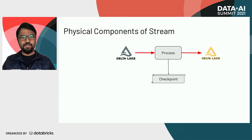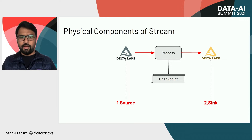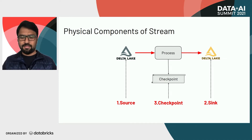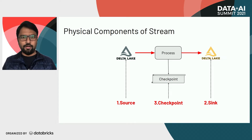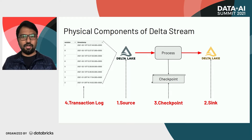From a physical components perspective of a stream, in terms of what really makes streaming possible, we need a source from where Spark can read input data incrementally, a sink where the output is stored, and a checkpoint location where the progress of your streaming query is persisted as each micro batch is processed. Here we're talking about Delta Lake as a streaming source, and the answer to what makes it efficient is actually the transaction logs, or Delta table history.